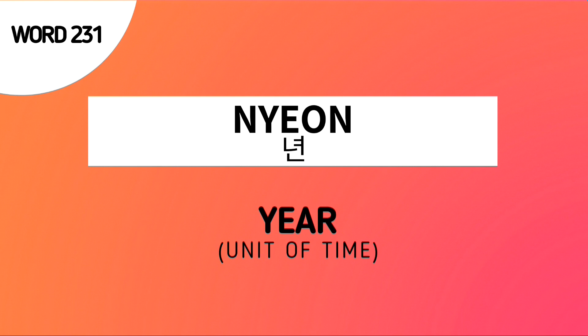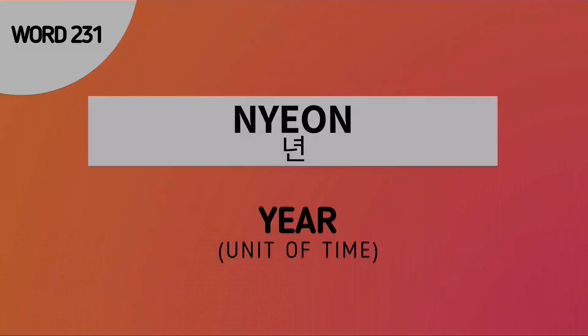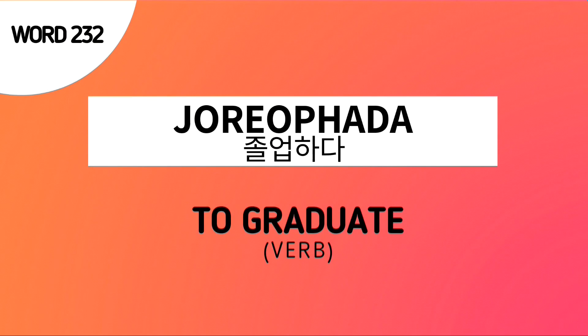The first word is 년 (nyeon), which is simply used to say 'year' in Korean — the unit of time. Next word is 졸업하다 (Choropada). This is a verb which means 'to graduate.' Again, Choropada means to graduate.